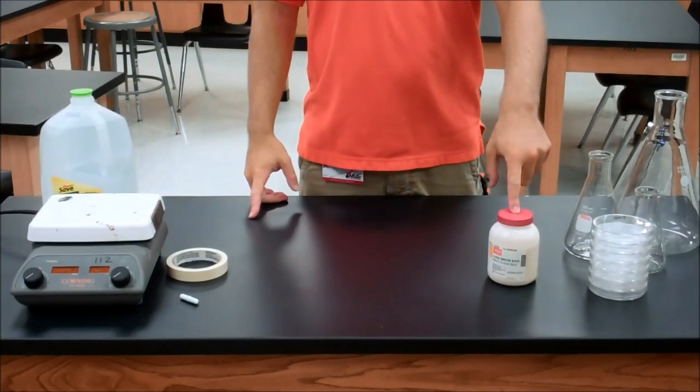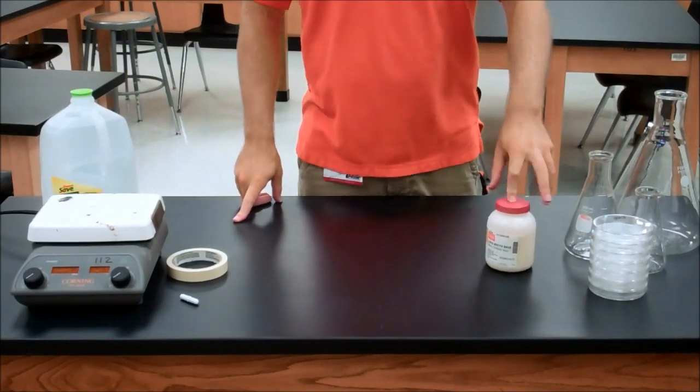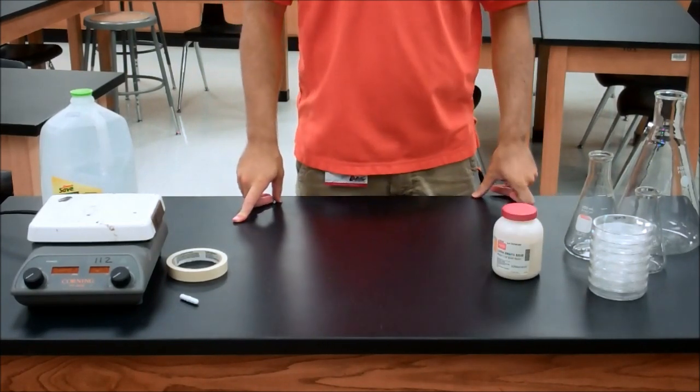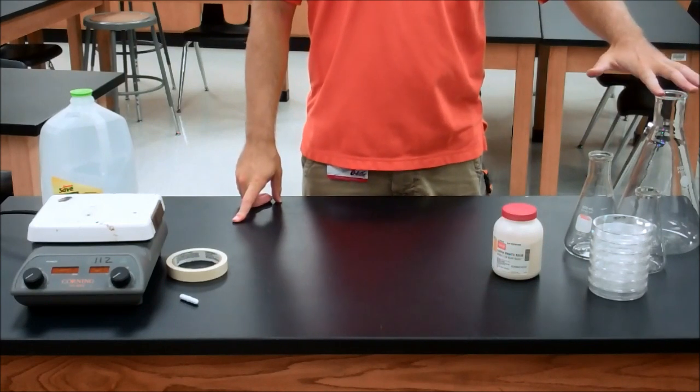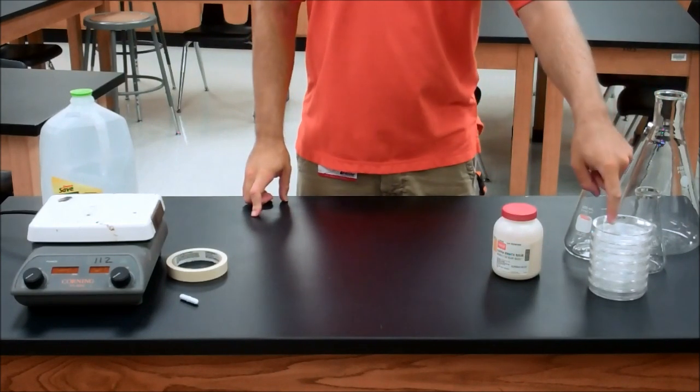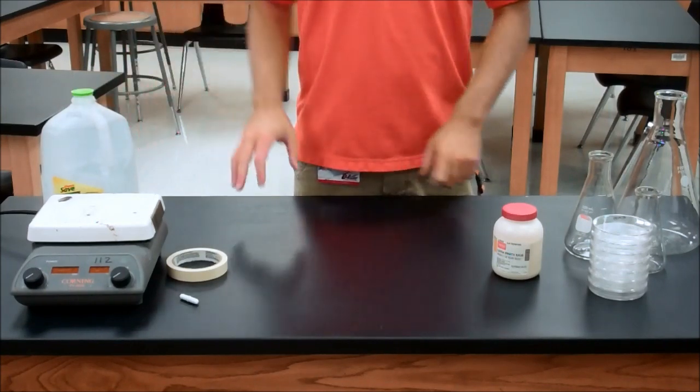You're going to need everything you see right here. Most importantly, some LB agar broth base. You're going to need an Erlenmeyer flask of some size, some petri dishes, DI water, and some sort of heat source.